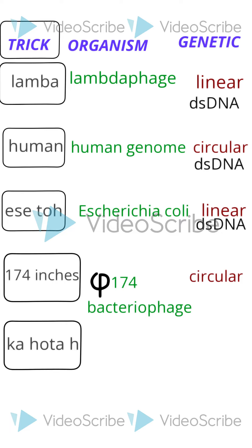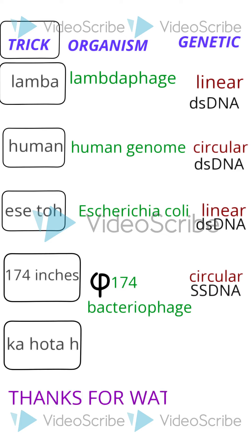Now let's talk about the DNA. All three — lambda phage, human genome, and S. colicida — have double-stranded DNA. What is common in these three? Double-stranded DNA. When I left, I saved the phi174 bacteriophage. What will happen? Single-stranded DNA. You must remember the sequence of the trick.